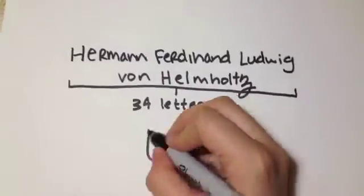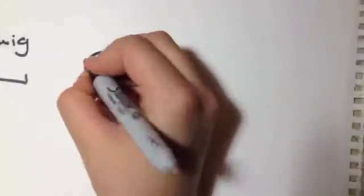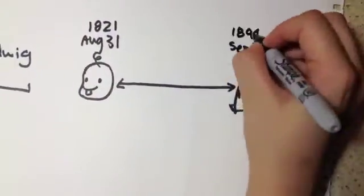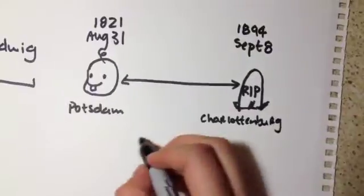Ferdinand Ludwig von Helmholtz was born in Potsdam, Prussia on August 31, 1821, and died September 8, 1894, in Charlottenburg, Germany.